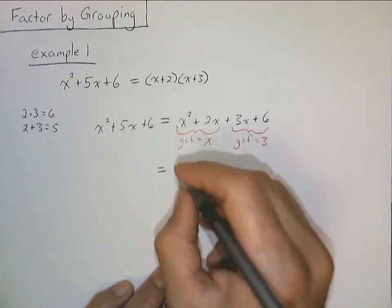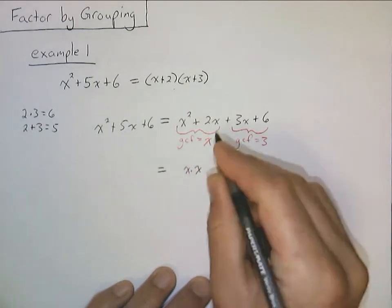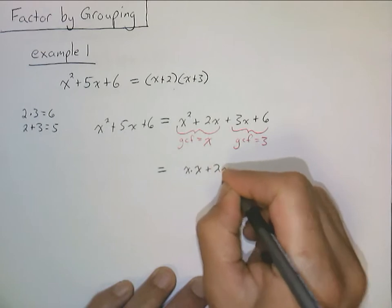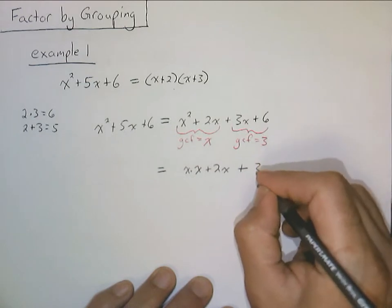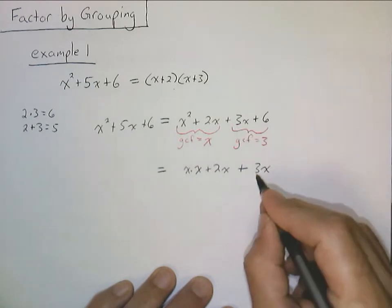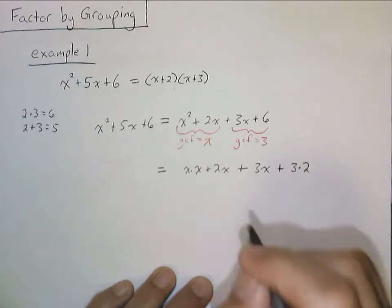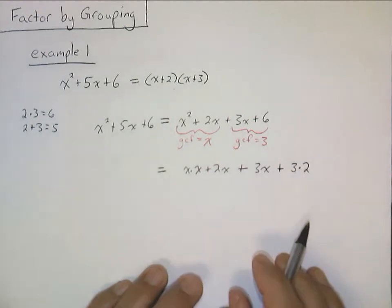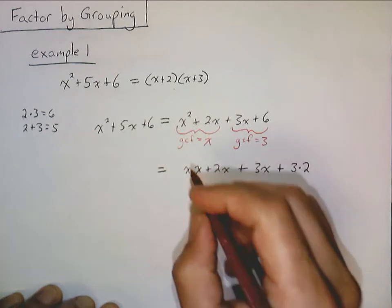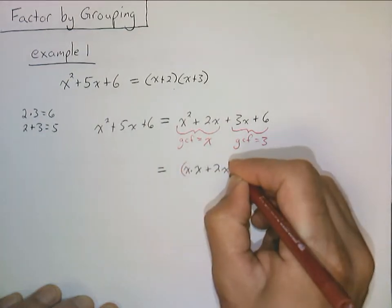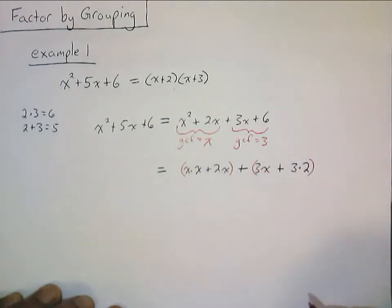So we're going to say that x squared is actually x times x. The 2x is just 2 times x, so we can clearly see the GCF there. Plus, 3x is of course just 3 times x — we can see this factor of 3 in there. Plus, 6 is now 3 times 2. So now we can see the GCF in that term as well. Then we're going to group these two terms together by putting parentheses around them, and we're going to group these last two terms together, putting parentheses around them.